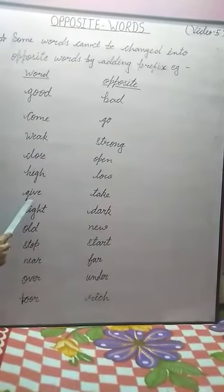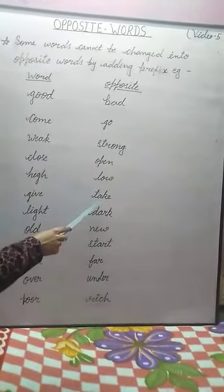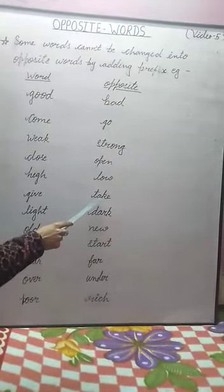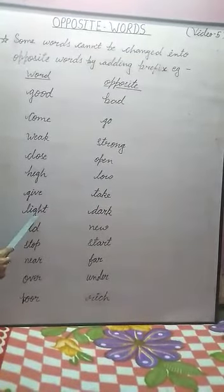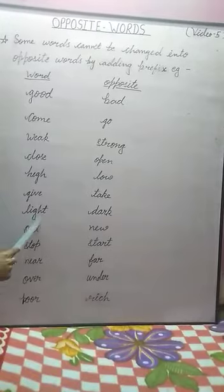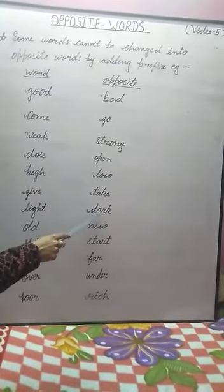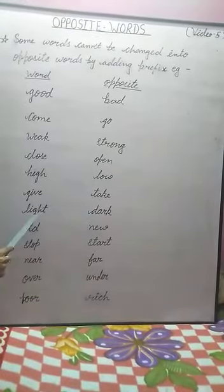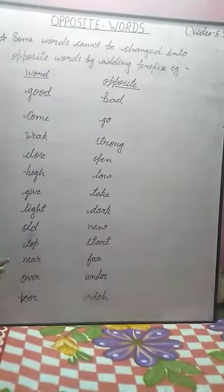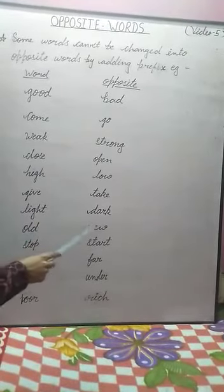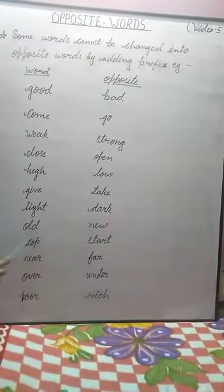Next is give. The opposite of give is take, and the opposite of take is give. Next is light. The opposite of light is dark, and the opposite of dark is light. Then next is old. The opposite of old is new, and the opposite of new is old.